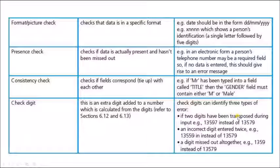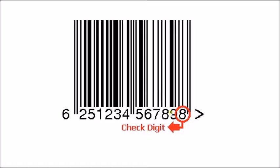If two digits have been transferred during the input like 13597 instead of 13579, I have some data which is transferred with error. Or incorrect digit entered twice like 13559 instead of 13579, I have some mistyping. Or I have a digit missed out altogether, like I have entered 1359 instead of 13579, I have missed the 7. All of this is like mistyping, or if it is like we are using barcode reader, we have some error in the barcode reader.